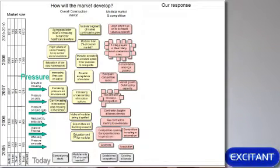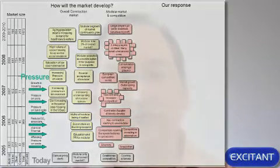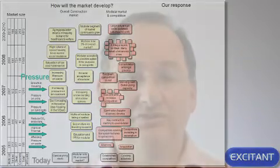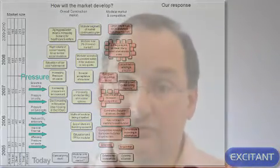They also looked at how the competition and the modular market would develop. They were saying that there are already a number of established competitors and their existing alliances, and by 2007 they were expecting new entrants to come in. By 2008-2009 there are going to be a number of big players in the market and many perhaps smaller, more economical ones. So the question is how do they pace themselves and how do they establish their credibility in that market?